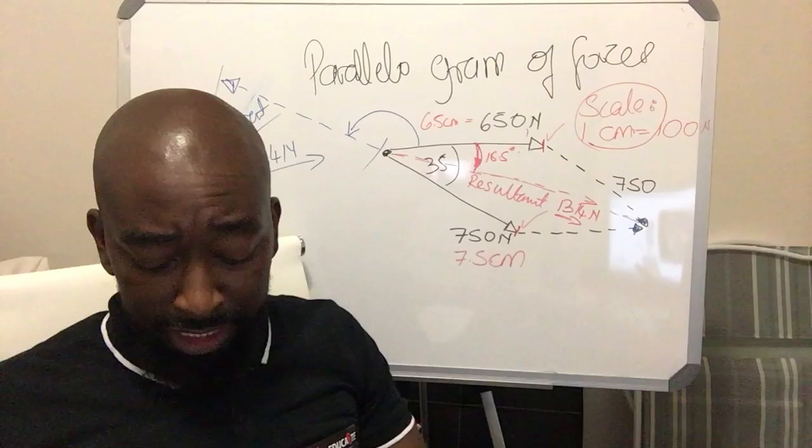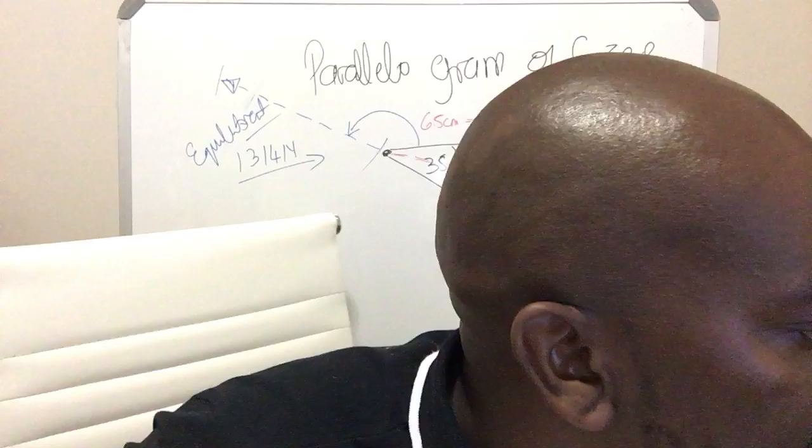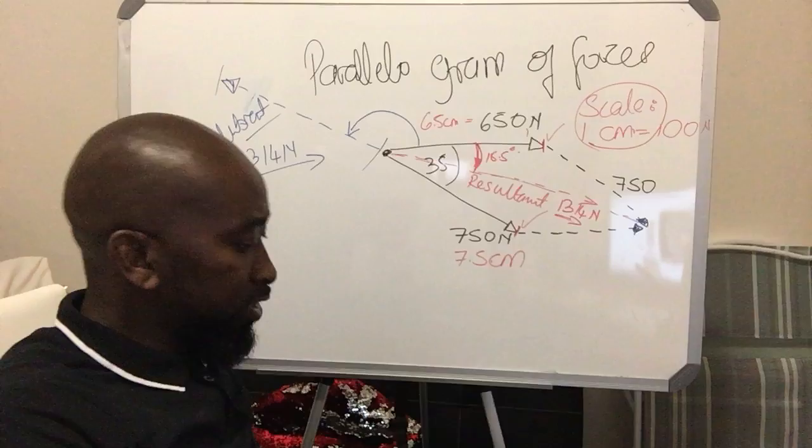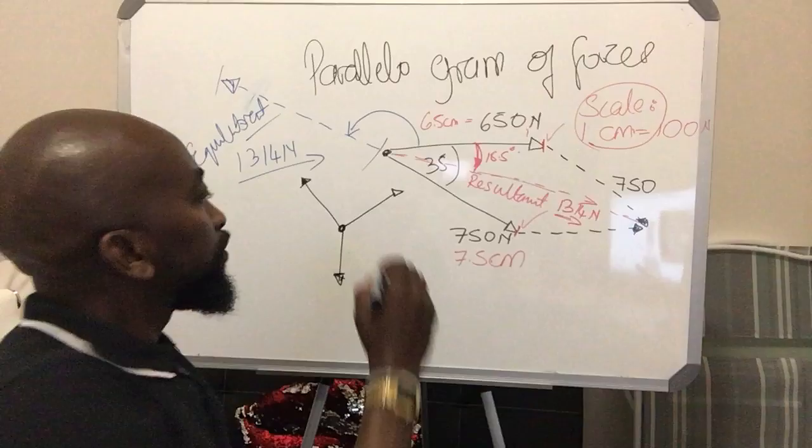Triangle of forces is the next topic. What we're going to look at is the fact that when you've got three forces acting on the same plane, the same object, at the same time — what do you do in that case? What you do is very simple: you apply your triangle of forces rules. In this case, this is the object, and you've got a force acting that way, a force acting that way, and a force acting that way.